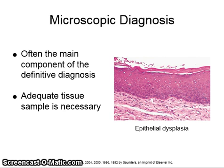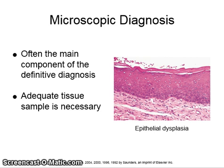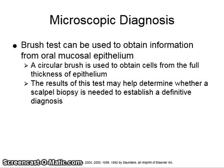Biopsies are necessary for making a microscopic diagnosis. Often the main component of the definitive diagnosis is microscopic. In order to get a good diagnosis, adequate tissue sample is necessary, and a sample that does not include margins may not be adequate. Brush biopsies have become very popular of late. This is a circular brush used to obtain cells from the full thickness of epithelium without cutting into it.